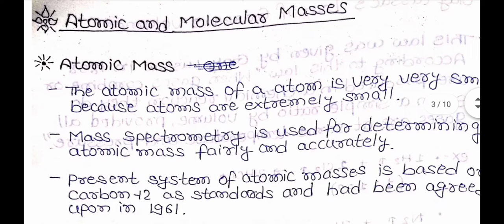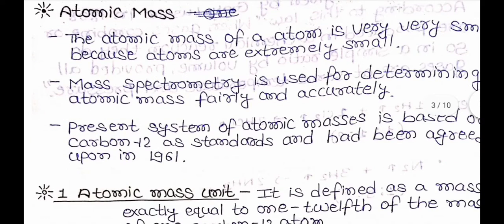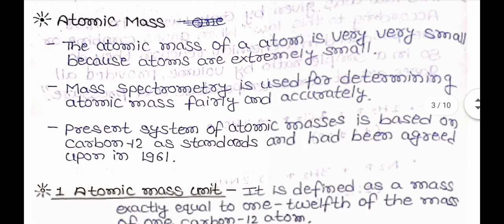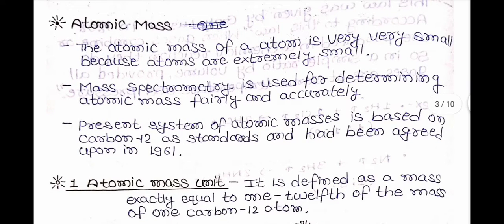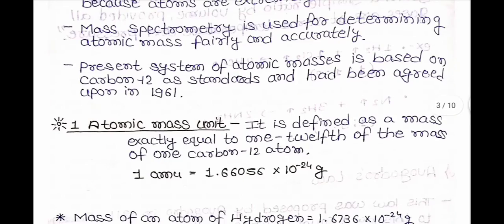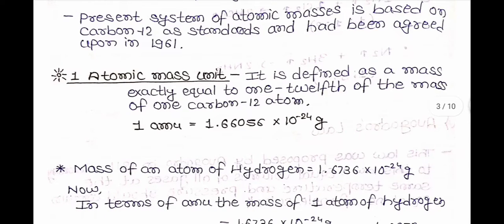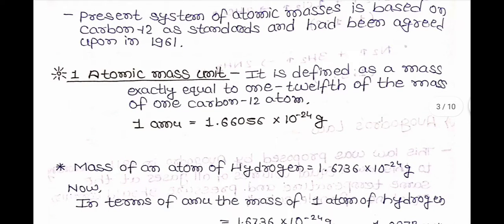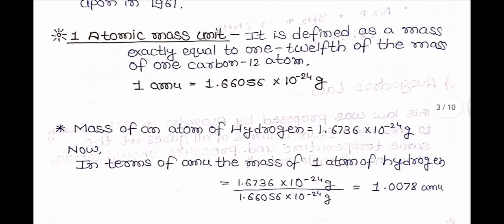Now, Atomic and Molecular Masses. Atomic Mass: The atomic mass of an atom is very very small because atoms are extremely small. Mass spectrometry is used for determining atomic mass fairly and accurately. The present system of atomic mass is based on carbon-12 as standard and had been agreed upon in 1961. One atomic mass unit (amu) is defined as a mass exactly equal to 1/12th of the mass of one carbon-12 atom. 1 amu = 1.66056 × 10⁻²⁴ grams.